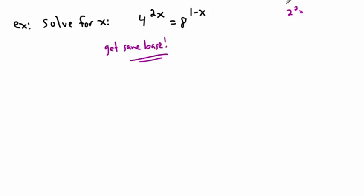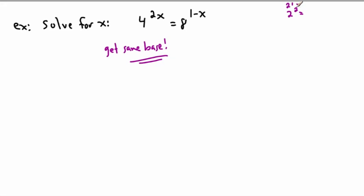2 to the power of 2, well, let's say 2 to the power of 1. 2 to the power of 1 is 2. 2 to the power of 2 is 4. 2 to the power of 3, that's 2 times 2 times 2, is 8. 2 to the power of 4 is 16, and so on.